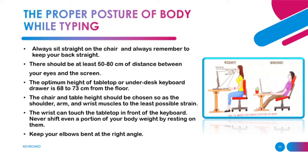Here are some tips for proper posture of the body while typing. Always sit on a chair and keep your back straight. It is advised to maintain at least 50–80 cm of distance between your eyes and the screen to avoid eye strain. The optimum height of the table or keyboard drawer is 68–73 cm from the floor. Keep your elbows bent at a right angle, that is 90 degrees.